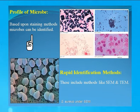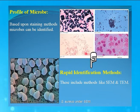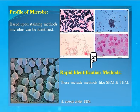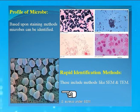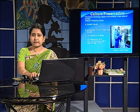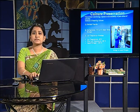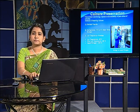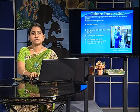There are certain methods known as rapid identification methods by which a microbe can be identified, which include electron microscopy. This is the picture of S. aureus under scanning electron microscope. After isolation and identification, one should require the preservation of the culture for future use.